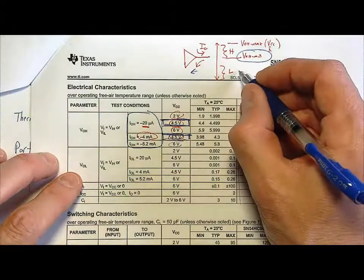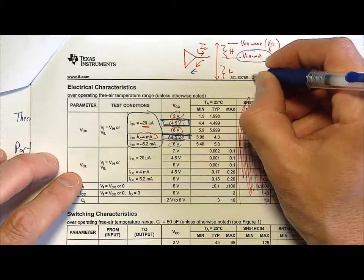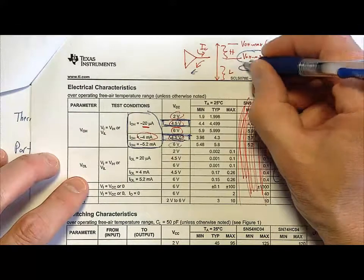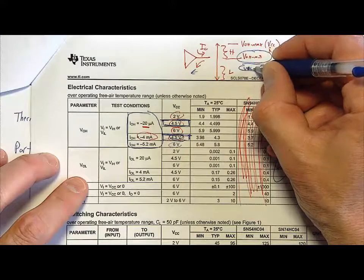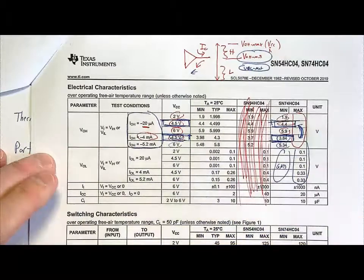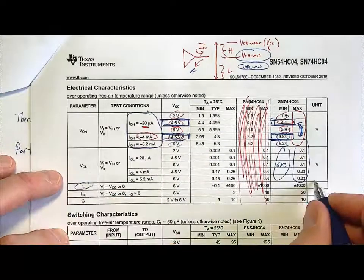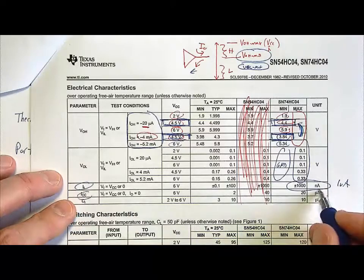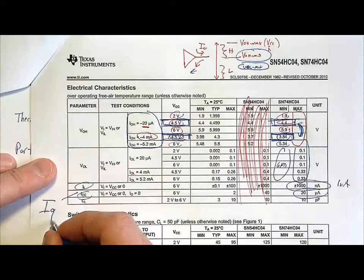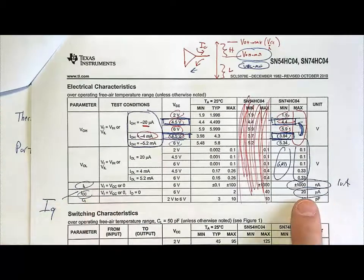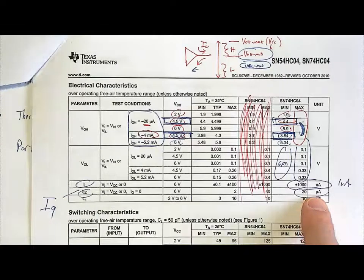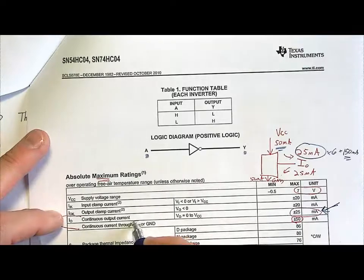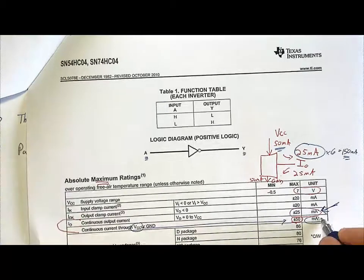VOL is the range of voltages for the low output — VOL minimum is assumed to be ground and not given; VOL maximum is what they provide. The input current II for any input is very small: 1,000 nanoamps or 1 microamp. ICC is 20 microamps — this is IQS (quiescent current). You know it's quiescent current because it's 20 microamps, very small relative to the continuous output current through VCC, which was 50 milliamps.